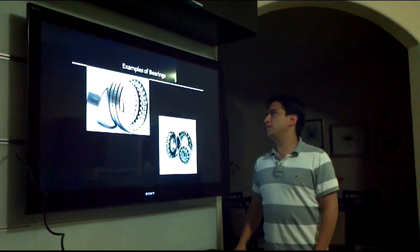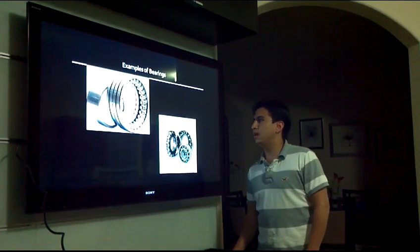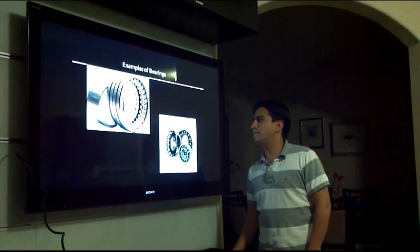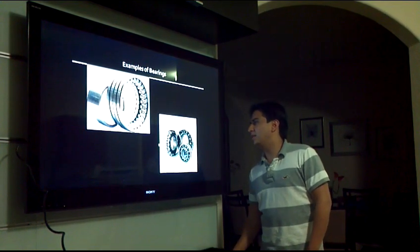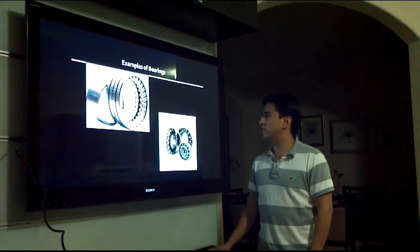Now we can see here some examples of bearings. In this case we have roller bearings and its elements are cylindrical. And here we can see the ball bearings. The ball bearings have a spherical element inside of them.